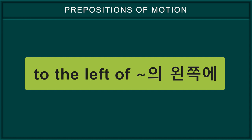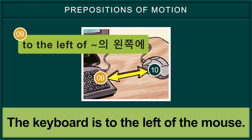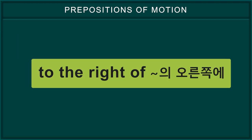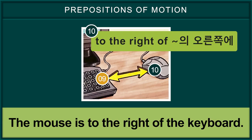To the left of — the keyboard is to the left of the mouse. To the right of — the mouse is to the right of the keyboard.